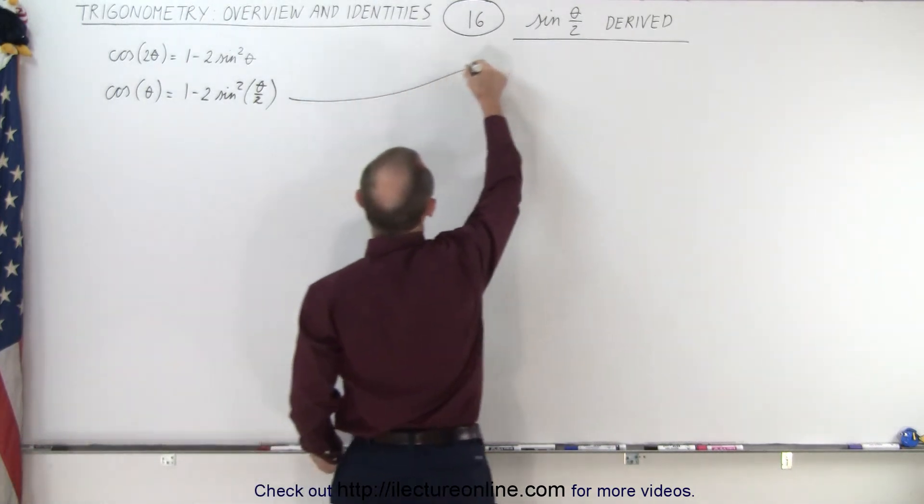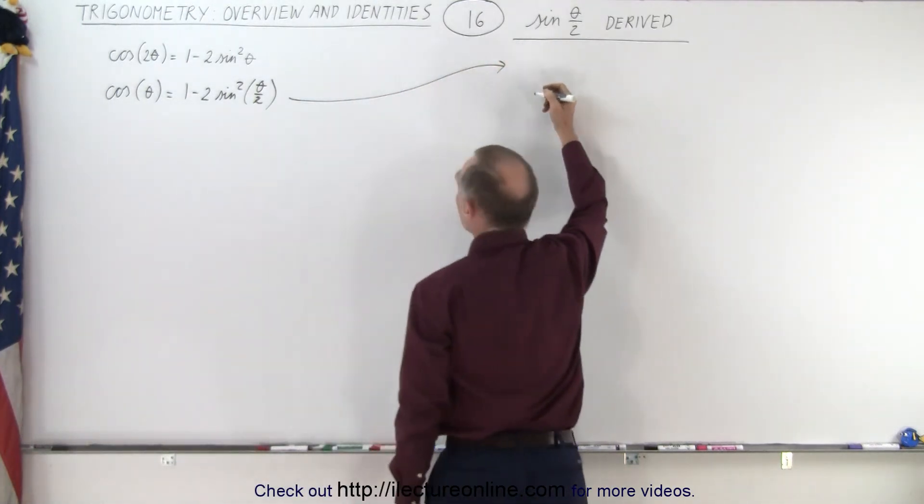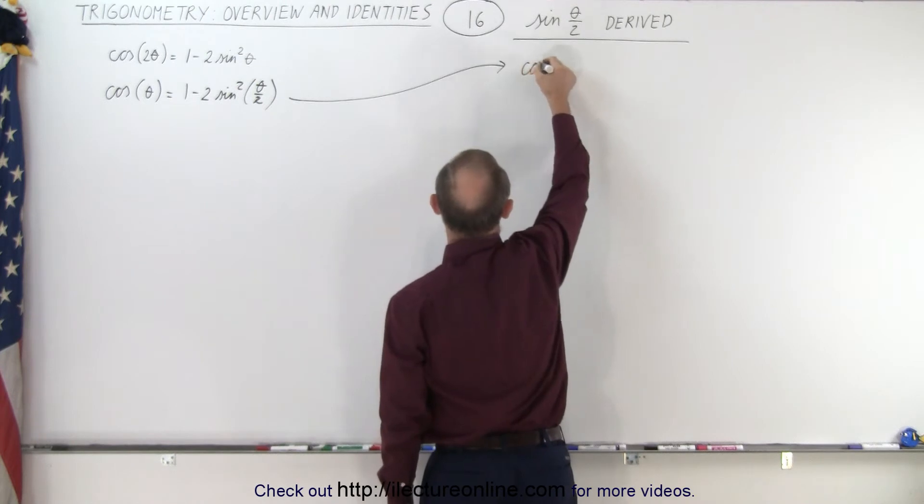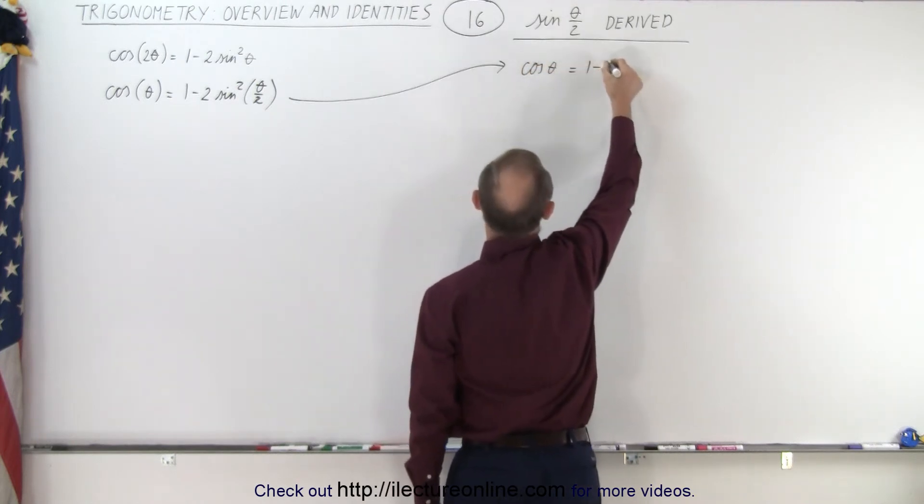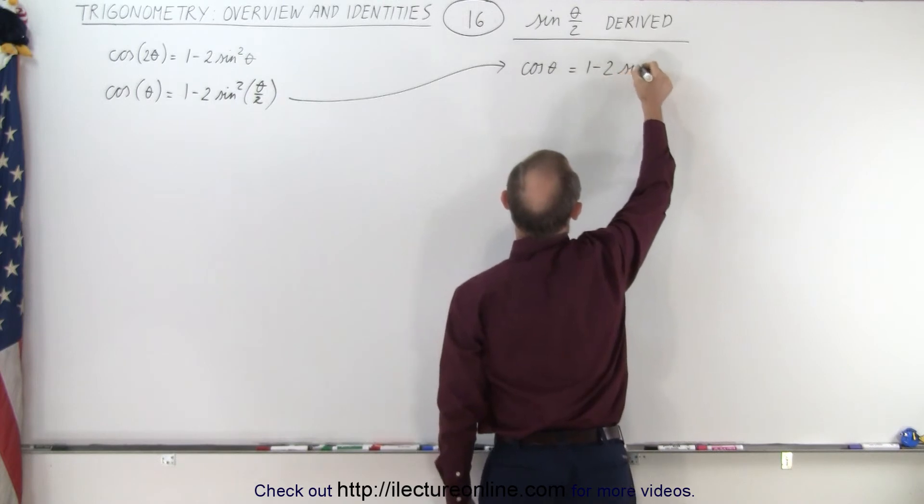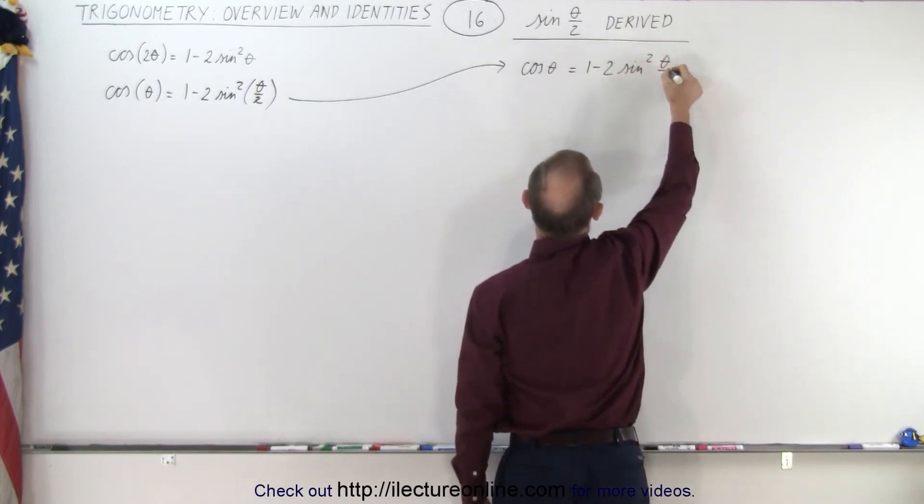And then we can go ahead and utilize that to solve for the half angle equation. So here we have the cosine of theta is equal to 1 minus 2 times the sine squared of theta over 2.